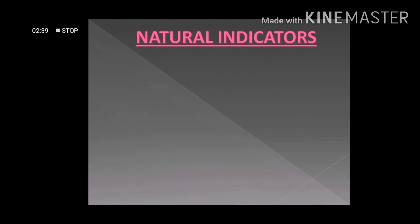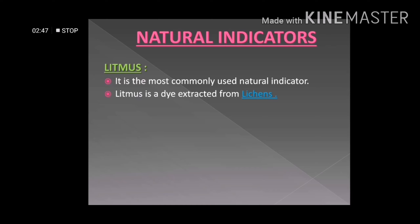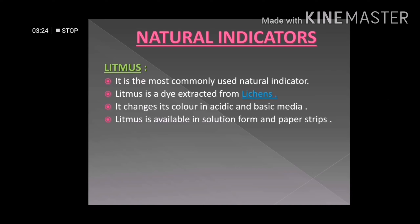Let us discuss natural indicators in detail. The first important and most commonly used natural indicator is litmus. Litmus is actually a dye extracted from lichens. Lichens are organisms that show symbiosis between fungi and algae, which we studied in Chapter 1. Litmus changes its color in acidic and basic mediums and is available in both solution form and as strips of paper. It comes in two colors: red litmus and blue litmus.